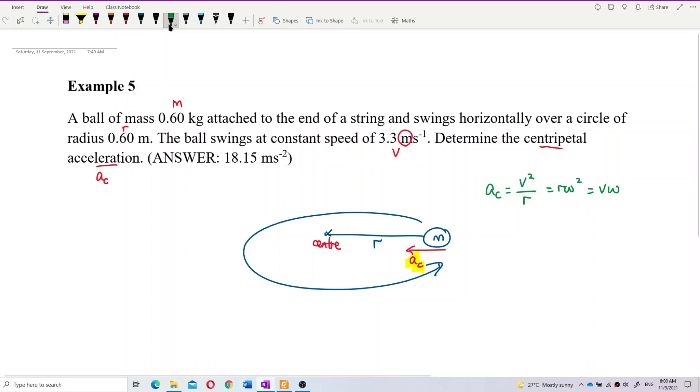So we just substitute the values: (3.3)² over r, which is 0.6. The centripetal acceleration is 18.15 meters per second squared.